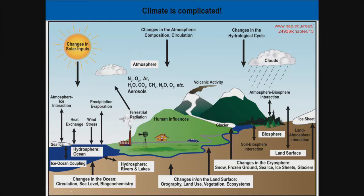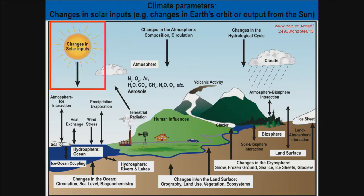Climate is complicated and all of these different factors affect the climate on Earth, but today we're going to focus on just one: changes in solar inputs. This relates to either changes in the Earth's orbit as we go around the Sun, or the amount of energy reaching Earth from the Sun — whether that's the amount of solar radiation being emitted, or the amount received by Earth due to changes in its orbit.